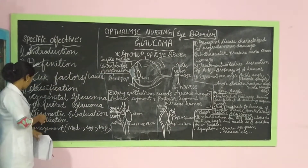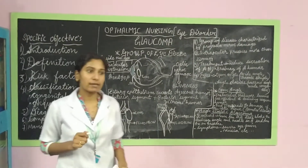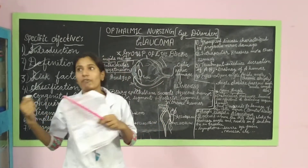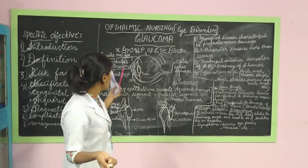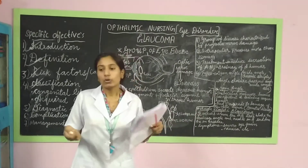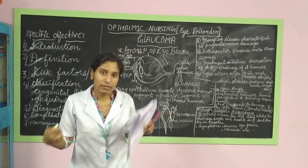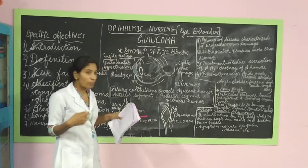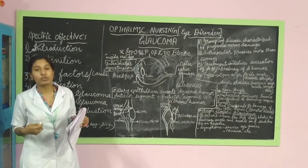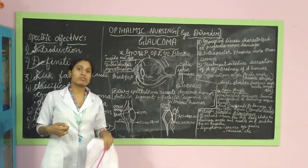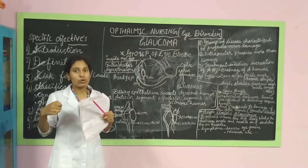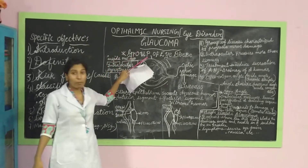Now we will see secondary Glaucoma. Secondary Glaucoma occurs if we are already suffering from another disease. For example, if we are suffering from diabetes, we may also get Glaucoma — this comes under secondary Glaucoma. Another risk factor for secondary Glaucoma is taking steroids for a long period, such as drugs taken for the treatment of tuberculosis. Because of long-term steroid use, disorders will occur in the eye leading to Glaucoma.